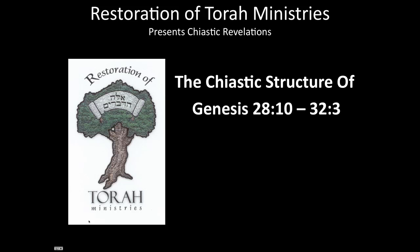Shalom, my name is Tony Robinson of Restoration of Torah Ministries, and we're going to continue our teaching, our presentations on chiastic structures, entitled Chiastic Revelations. In today's lesson, we're going to look at the chiastic structure of Genesis chapter 28, verse 10 through chapter 32, verse 3.